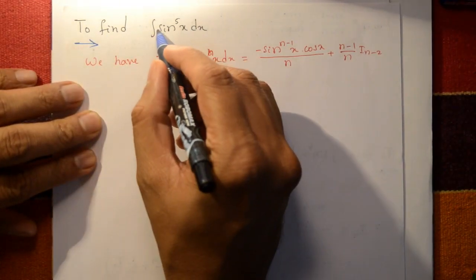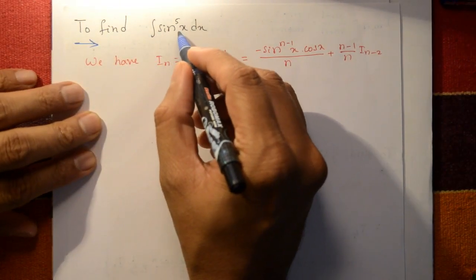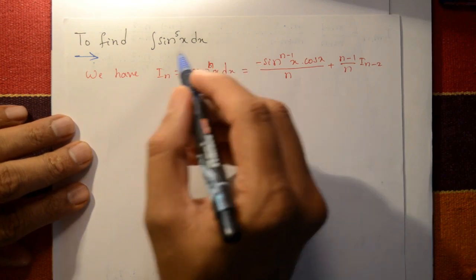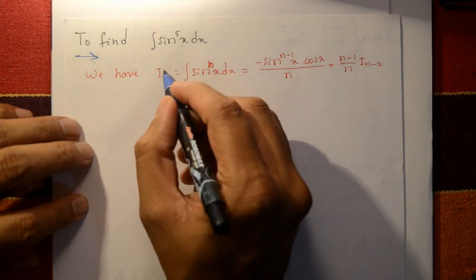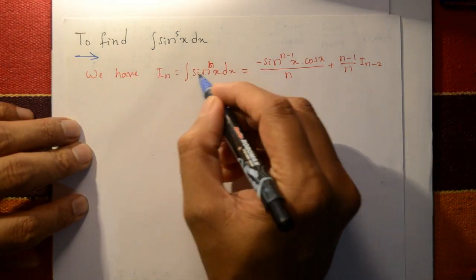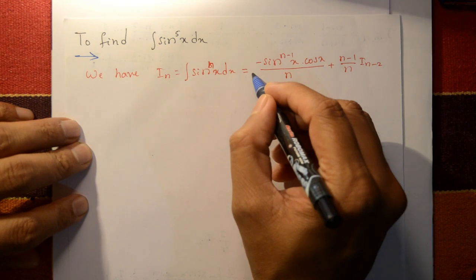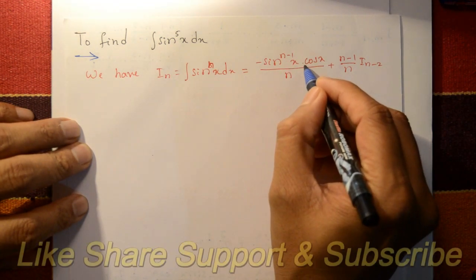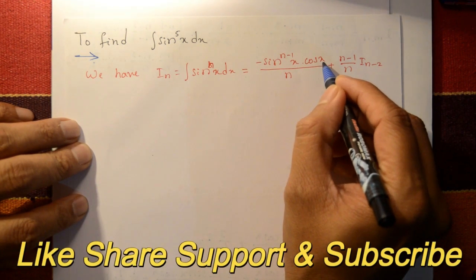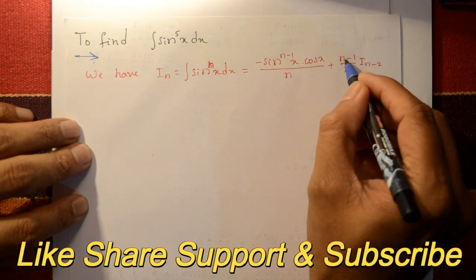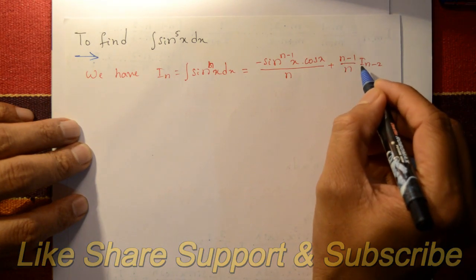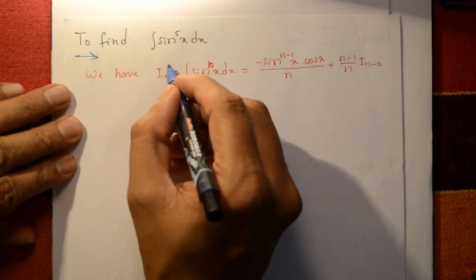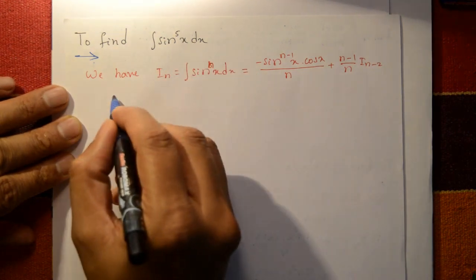To find the integration of sin raised to 5 x dx, we use the reduction formula: the integration of sin raised to n x dx equals minus sin raised to n minus 1 x into cos x divided by n, plus n minus 1 upon n into I(n minus 2).